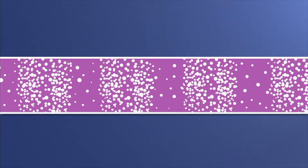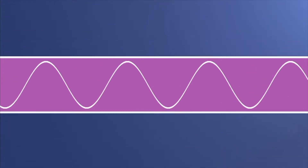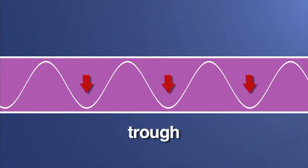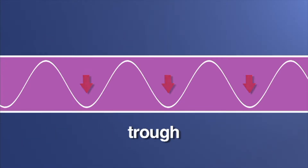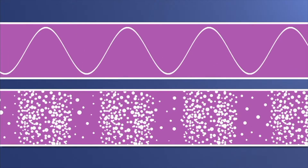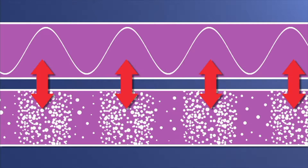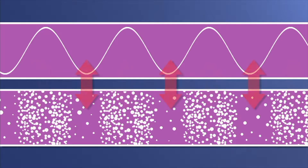But sound waves can also be represented like this. Notice how the wave goes up and down with high points called crests and low points called troughs. The crests represent compressions and the troughs rarefactions.